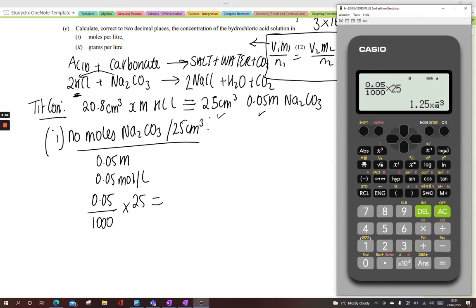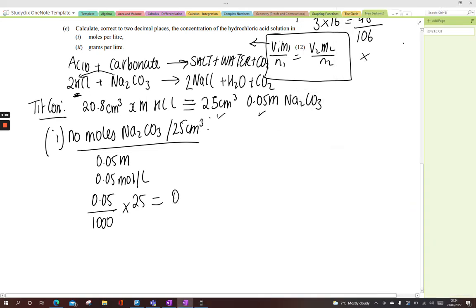We get 1.25 × 10⁻³. I don't really like that form, so I'm going to press shift, mode 8 for normal—just look for norm, your calculators could be different—and then 2, and 0.00125 moles. Just don't delete that.